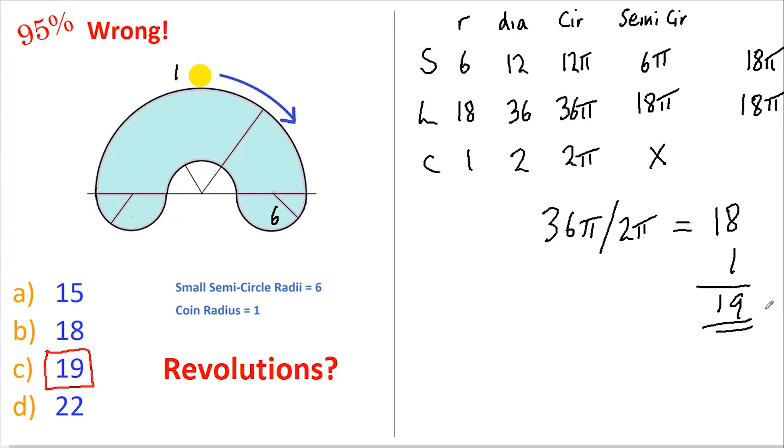And finally, a follow-up question: if the coin was to go round this track on the inside, how many revolutions would it make? What do you think? Let me know in the comments. Hope you enjoyed that, see you in the next one.